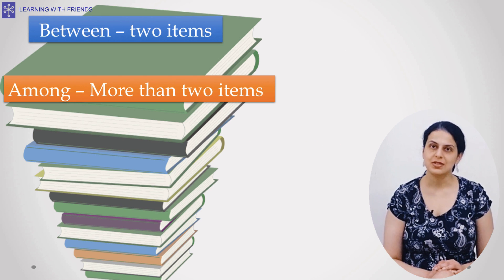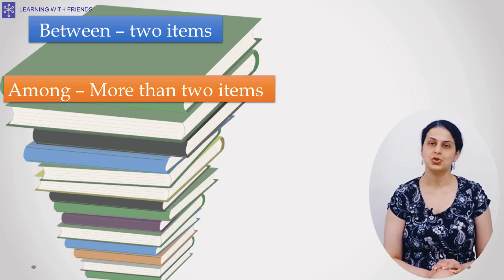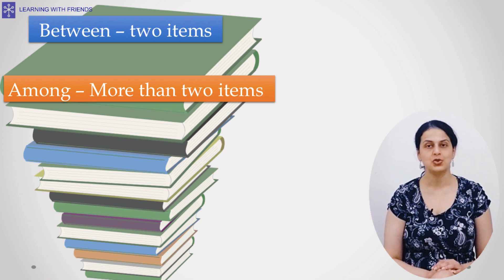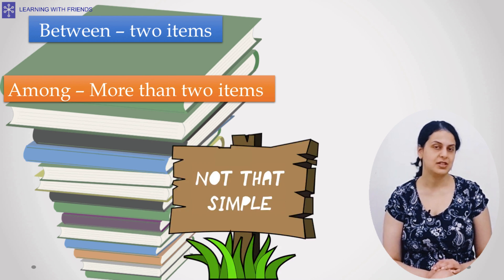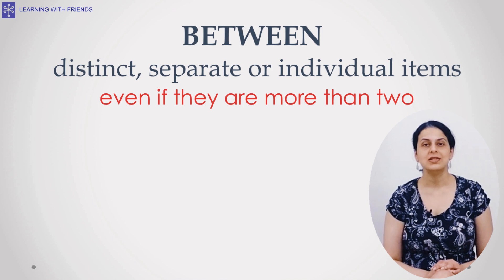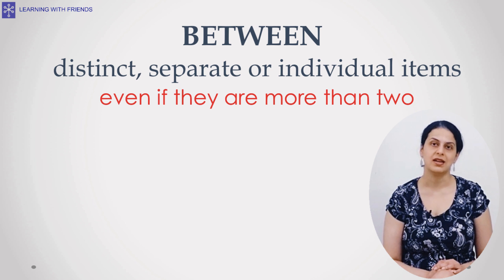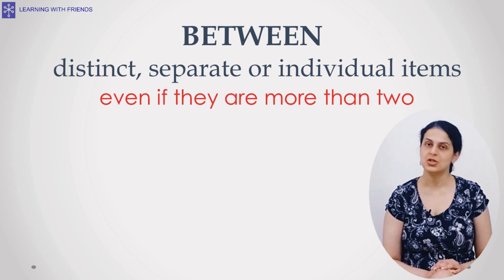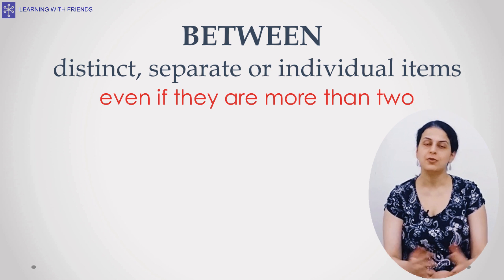Many grammar sources will tell you that 'between' is used for choices involving two items and 'among' for choices that involve more than two items. But it is not as simple as that. 'Between' should be used when one is talking about distinct, separate, or individual items, even if there are more than two of them.